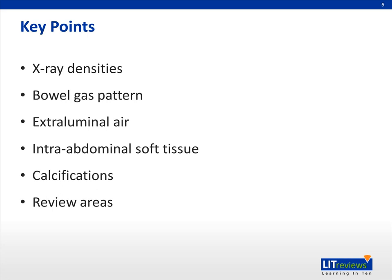Here are the key points that I will be going through. I will be talking about x-ray densities, the normal bowel gas pattern, discussing the different types of extra-luminal air, before going on to the soft tissue organs within the abdomen. There are also different types of calcifications that can be seen, and lastly, touching briefly on the review areas.